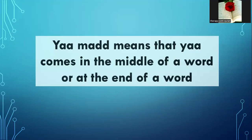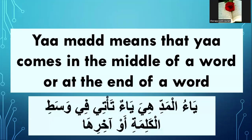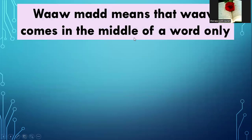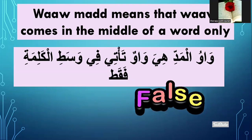Number three — ya mad means that ya comes in the middle of a word or at the end of a word. True or false? Yes, it's true. Number four — waw mad means that waw comes in the middle of a word only. Only? No, that's wrong — false.